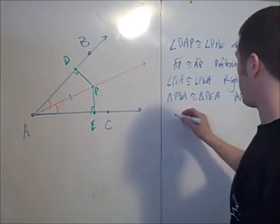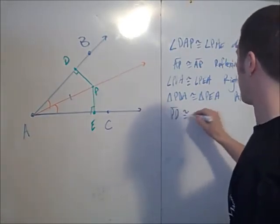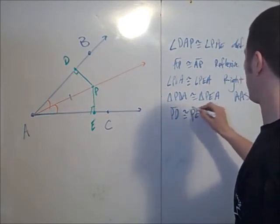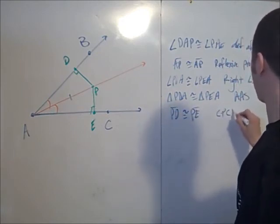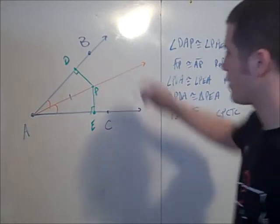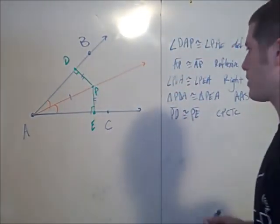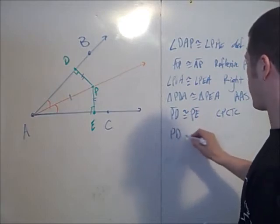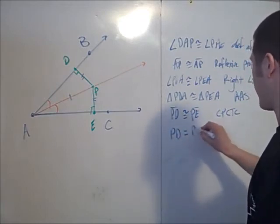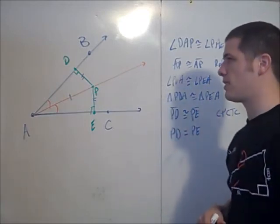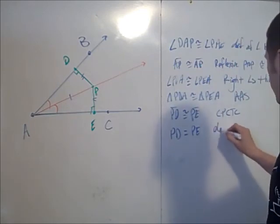So now we know that segment PD is congruent to segment PE by CPCTC—corresponding parts of congruent triangles are congruent. Therefore, the length PD equals the length PE. Those distances are equal by the definition of congruence.